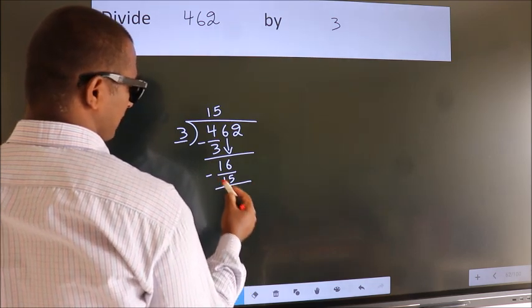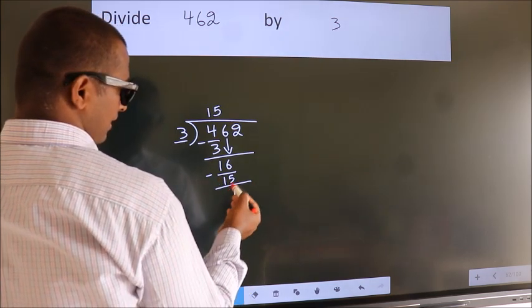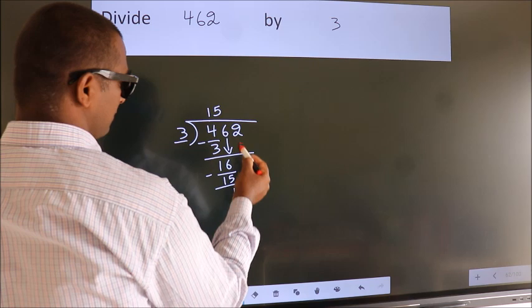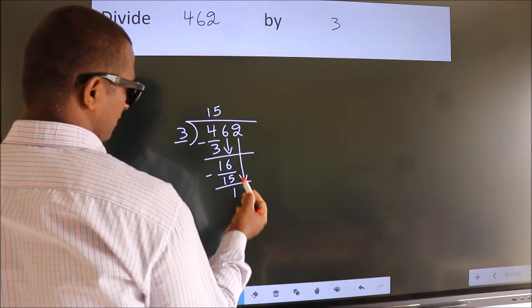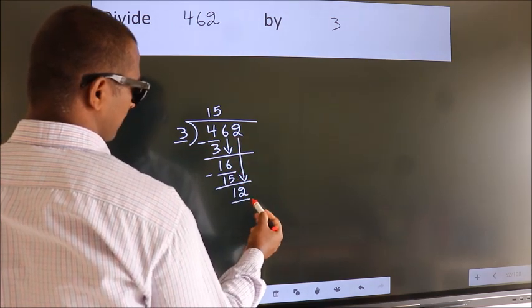Now, we subtract. We get 1. After this, bring down the beside number. So, 2 down. So, 12.